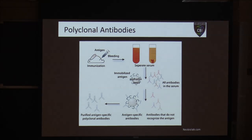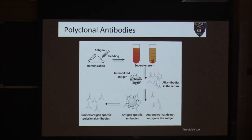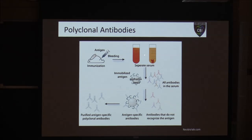How do we make a polyclonal antibody? Poly stands for many, so we're making many different antibodies that hopefully all target the same protein. We start by taking our protein of interest — usually a small fragment — and injecting it into some animal. This causes an immune response. A few days or weeks later we bleed that animal, spin down the blood to remove cellular debris, and extract the serum containing the antibodies.